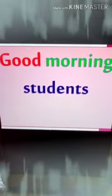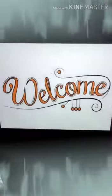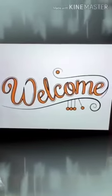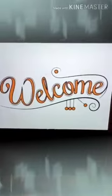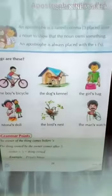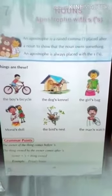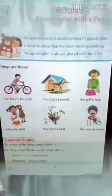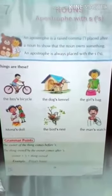Hello, good morning students. Welcome to your English 1 class. I am Eurythames. Today I am going to teach you our lesson 7: Nouns apostrophe with S.